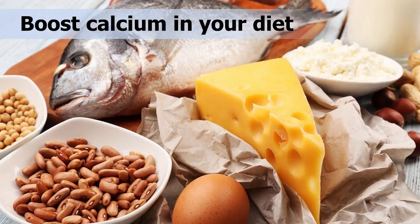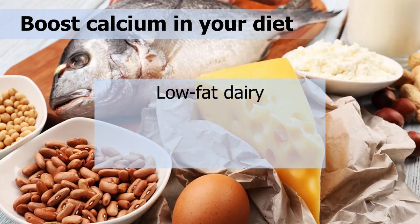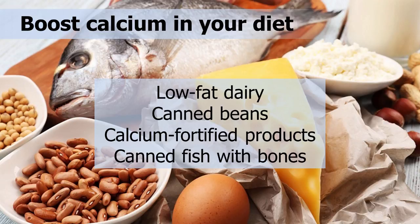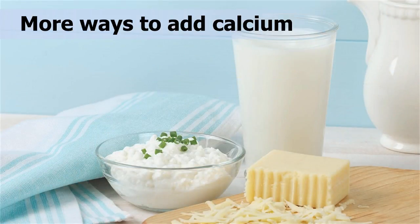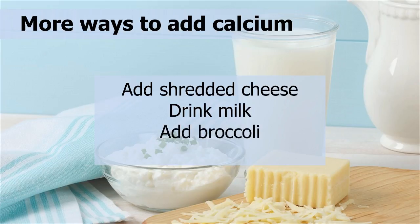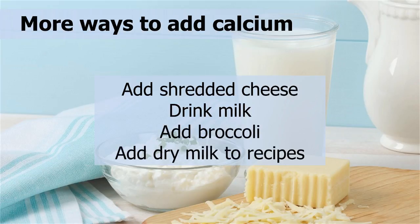To help reduce your risk of osteoporosis, consider increasing the following foods in your diet to boost calcium: low-fat dairy products; canned beans such as Navy, Great Northern, and Pinto beans; calcium-fortified products such as orange juice and cereal; and canned fish with bones such as sardines and salmon. You can also add calcium by trying these tips: add shredded cheese to English muffins, bagels, or toast; drink milk at meals instead of soda and enjoy chocolate milk or hot chocolate for a snack; add broccoli to salads; and add non-fat dry milk to recipes such as meatballs, meatloaf, and creamed soups.